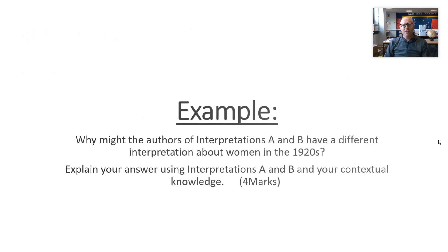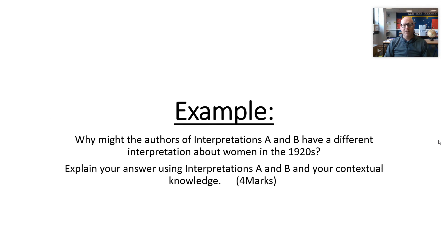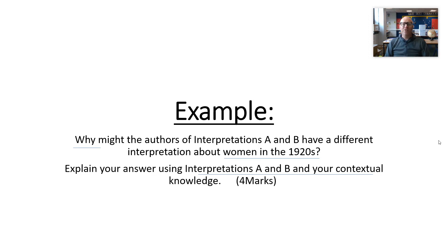Now, what about the next question: 'Why might the authors of interpretations A and B have different interpretations about women in the 1920s? Explain your answer using interpretations A and B and your contextual knowledge.' Why are they different? There are lots of reasons — the way they were brought up, what they watch, where they live, who they interact with, what they want people to do. You can have lots of different reasons for it.